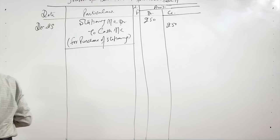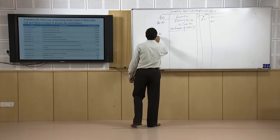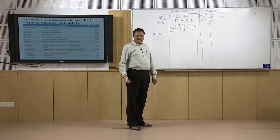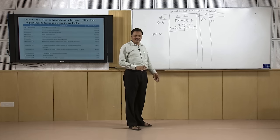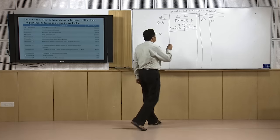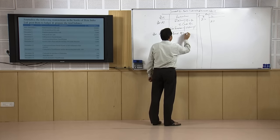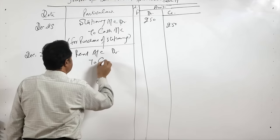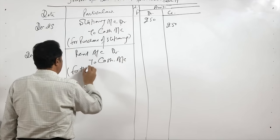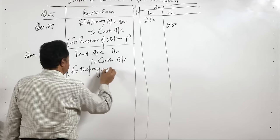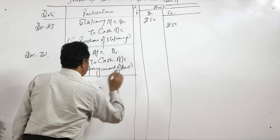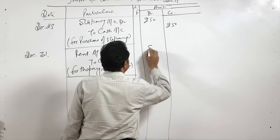The next transaction is on December 31: paid office rent. Office rent is also a small expense, so it is a nominal account. Debit all expenses and losses, credit all incomes and gains. Rent is an expense, so we debit rent account, rent account debited to cash account — for the payment of rent in cash. The amount is ₹800 debit and ₹800 credit.